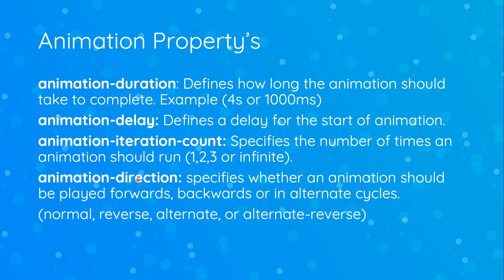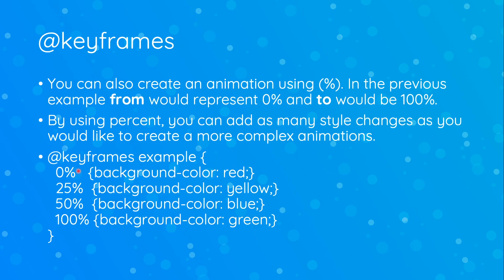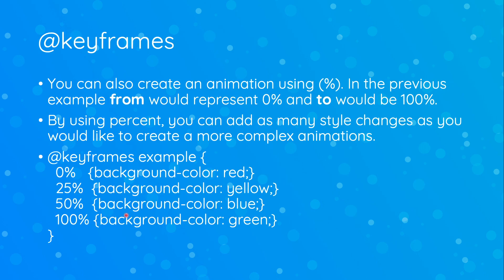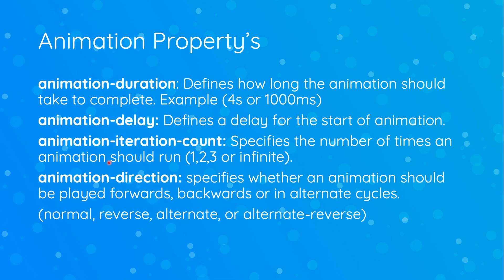We have animation-direction, which specifies whether an animation should be played forwards, backwards, or in alternate cycles. By default, the normal direction is going to be from 0% to 100%. If we give the animation-direction a value of reverse, it runs from 100% to 0%. The other two values are 'alternate', which plays forward first then backwards, and 'alternate-reverse', which plays backwards first then forward.